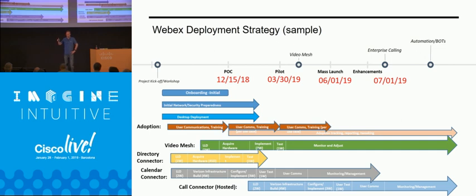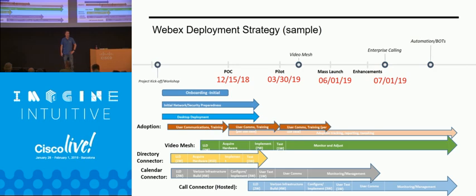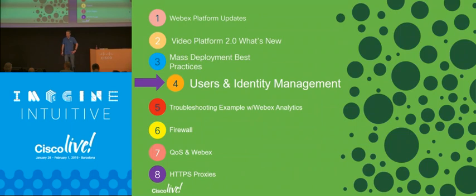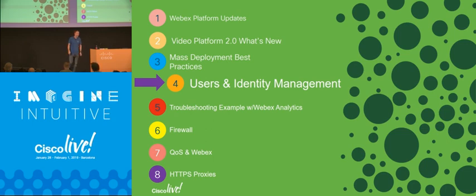The point is: identify key deployment steps on the technical side, identify the human factors, train the users, get their feedback, feed that back into the system, and use available analytics to measure your success and make changes. A typical deployment might take three to six months. This isn't just make the software available and hope for the best — you have to watch it, and you do have the tools to measure, monitor, and work with users.